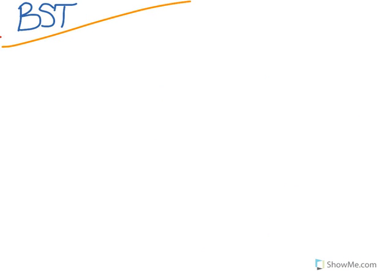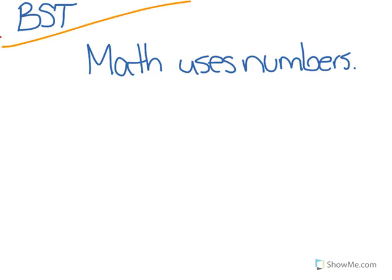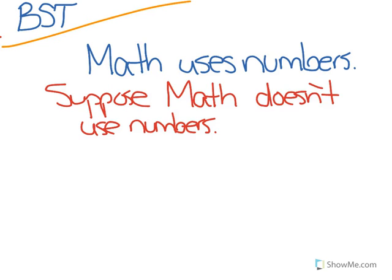So for example, I might start with the statement, math uses numbers. And if I were to try and prove this using proof by contradiction, first of all, notice that this is not a conditional statement, there's no if or then. But if I were to prove this using proof by contradiction, I would first suppose math does not use numbers, not p, or the opposite of the statement.